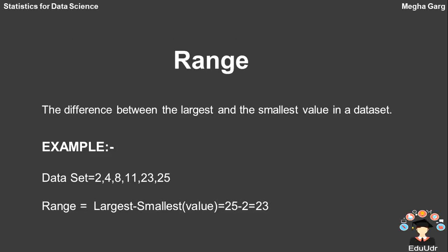What is range? Range is the difference between the largest and the smallest value in a data set. In our data set, the smallest value is 2 and the largest value is 25, so our range is 25 minus 2, which equals 23.